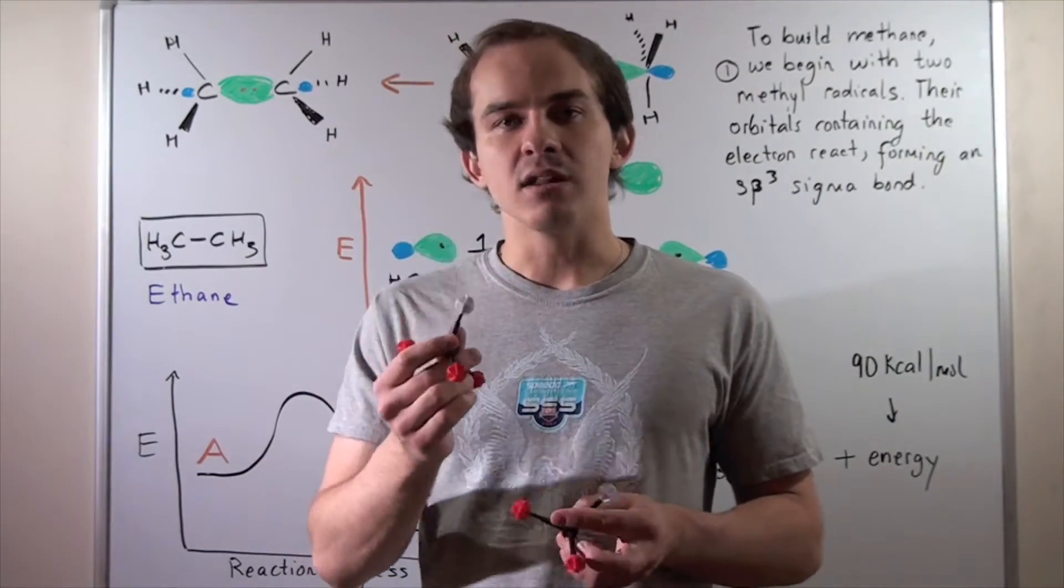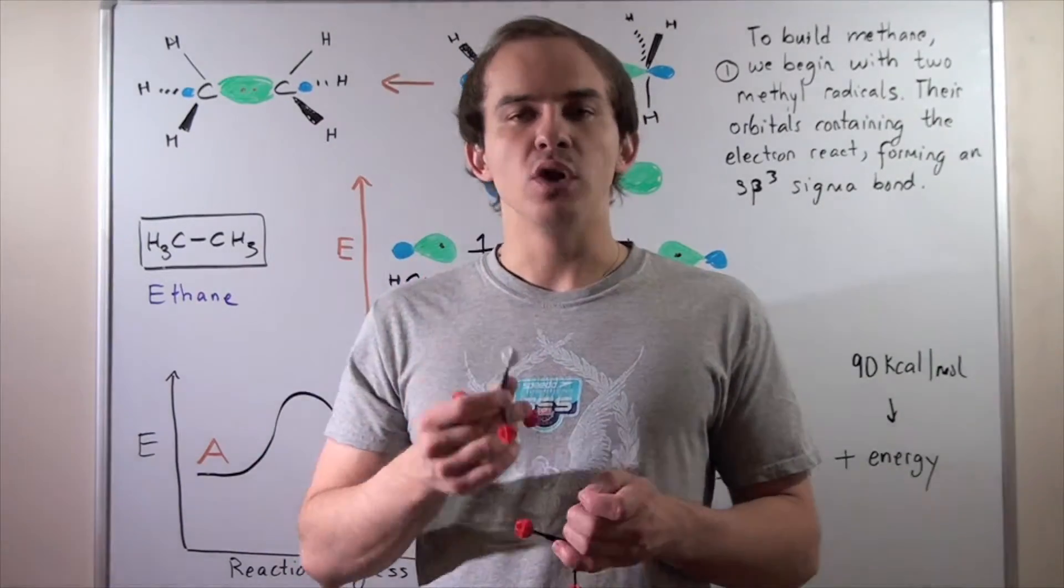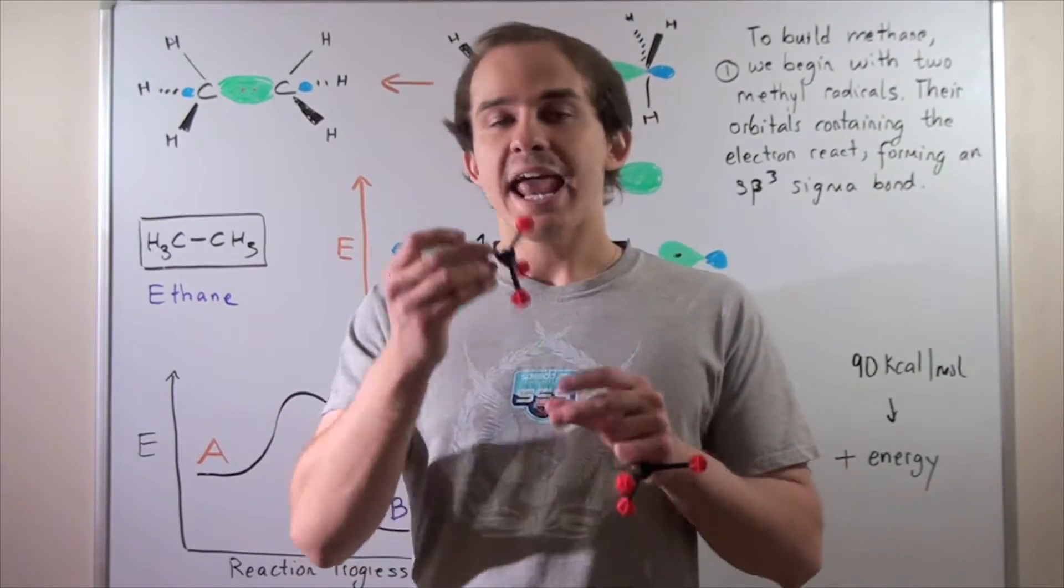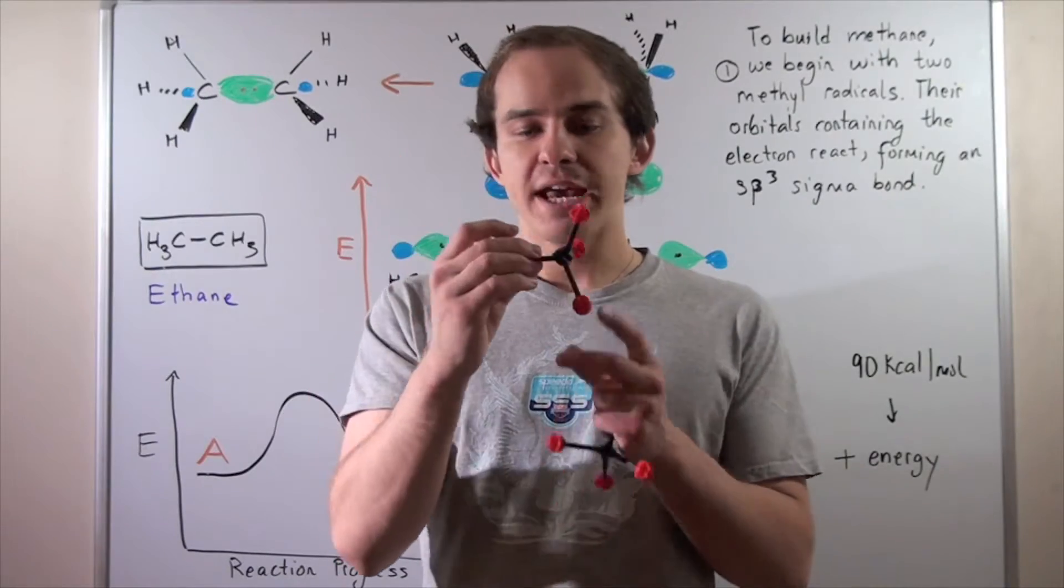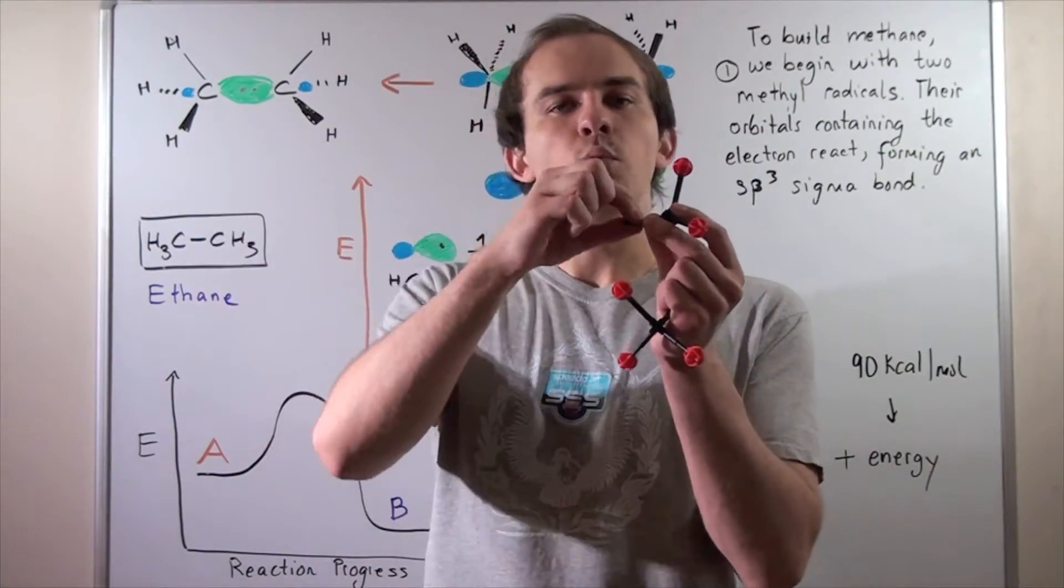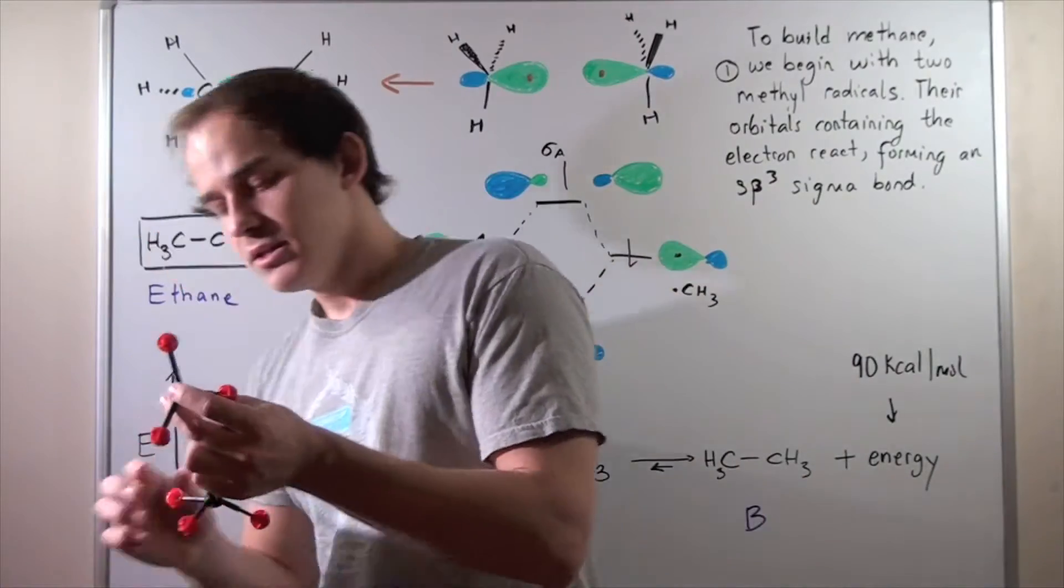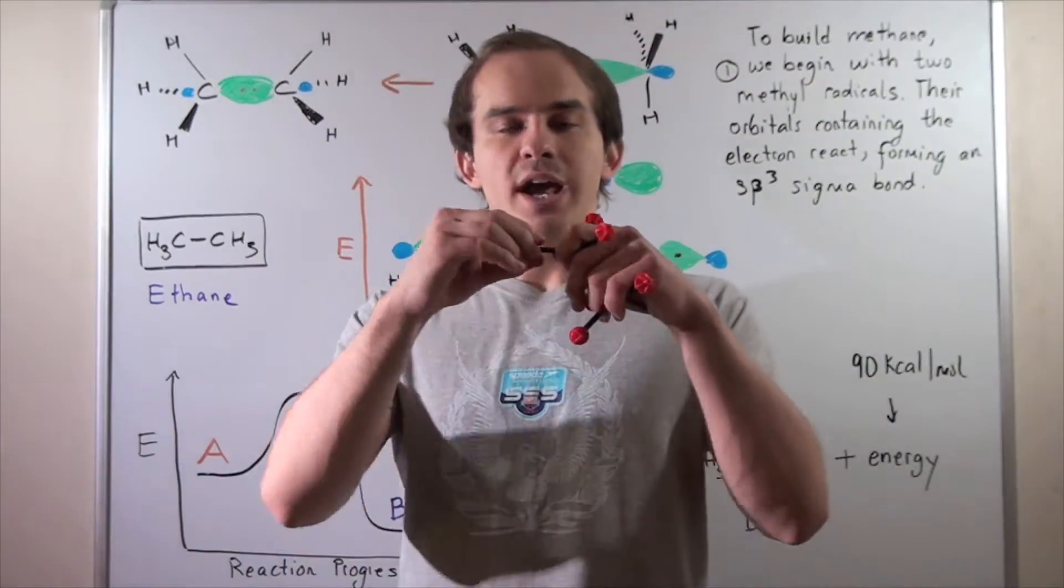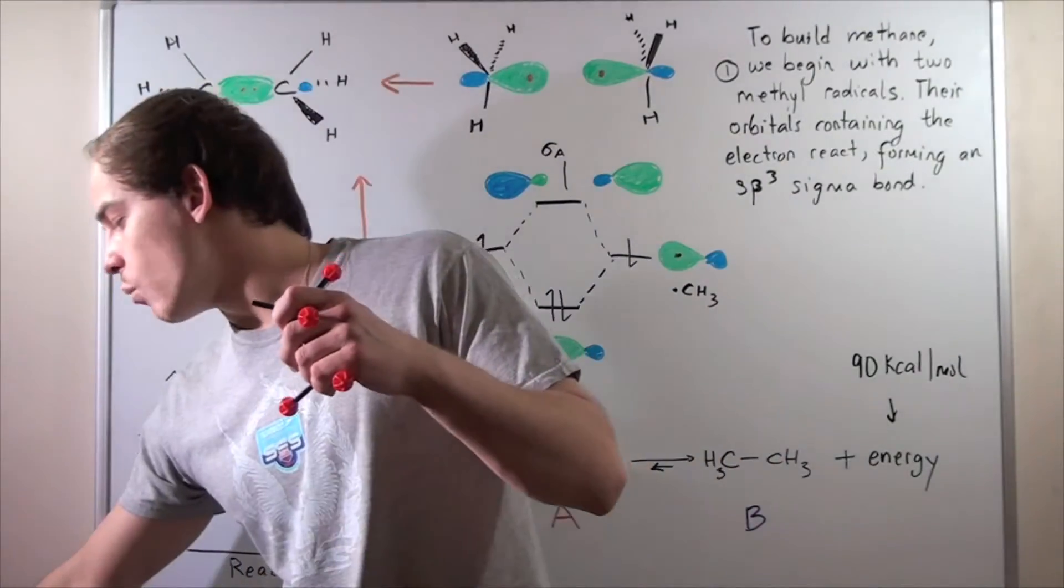A methyl radical is simply a methane molecule minus an H atom and an electron. So to create a methyl radical from a methane molecule, we take away an H atom along with one electron. So the same thing goes for this second methane molecule. We take away an H atom along with one electron.